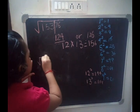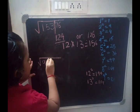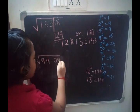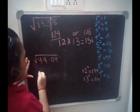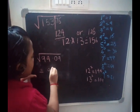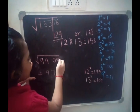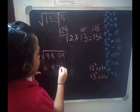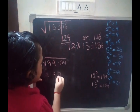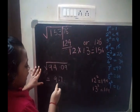Now I will move to decimal square root. First, I will take one example: 94.09. You know the answer of 9409 — it is 97. Now, where does the decimal come? Here the decimal is 2 places from the right-hand side, so in the answer it will be half of that, which is 1 place from the right-hand side. The answer will be 9.7.